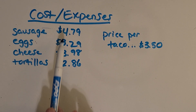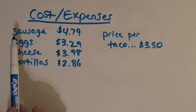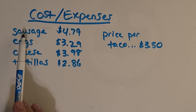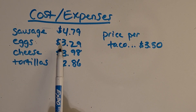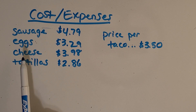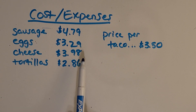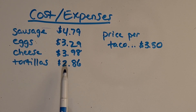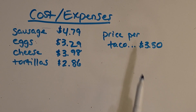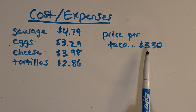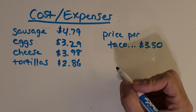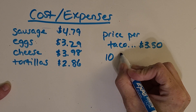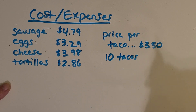Here are the different expenses that it took to make the breakfast tacos. The sausage cost four dollars and seventy-nine cents. Eggs cost three dollars and twenty-nine cents. Cheese cost three dollars and ninety-eight cents, and tortillas two dollars and eighty-six cents. Then I sold the tacos for three dollars and fifty cents each, and I sold ten tacos — this recipe made ten tacos.